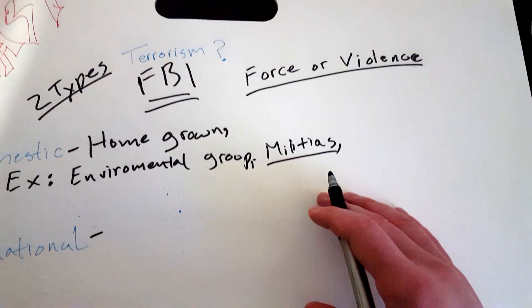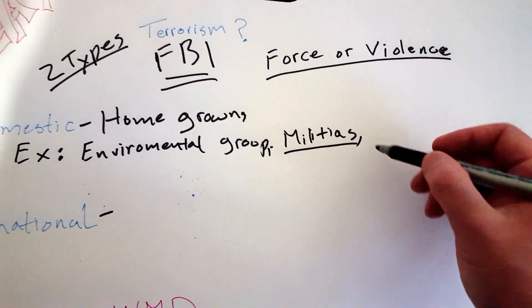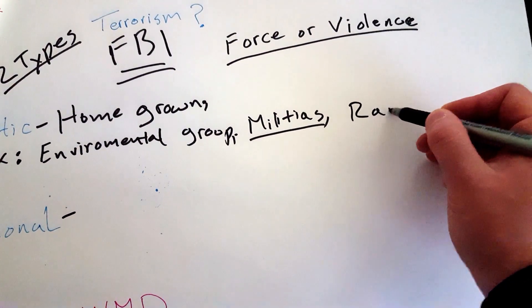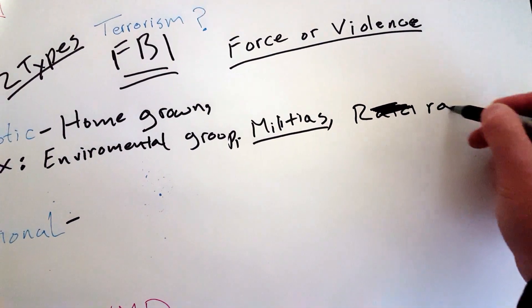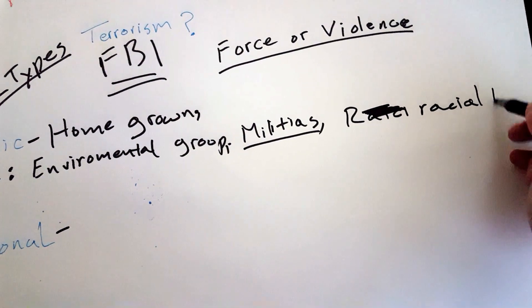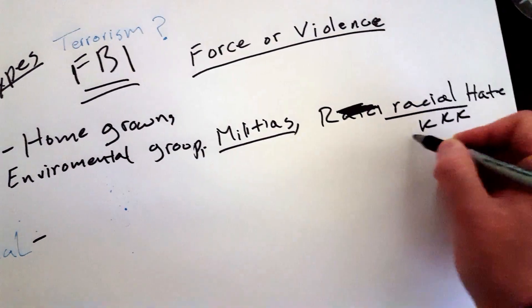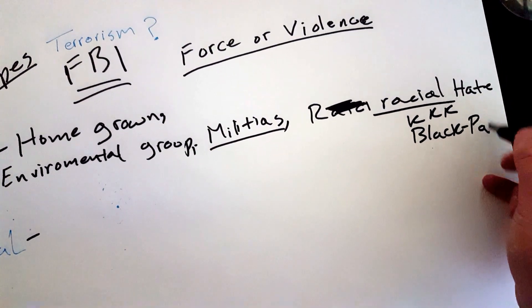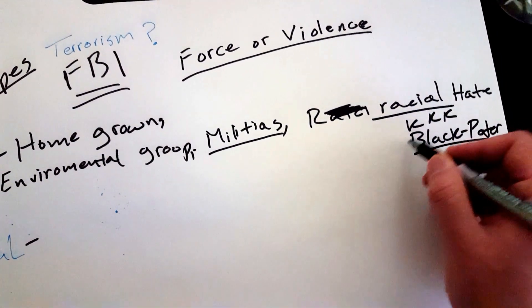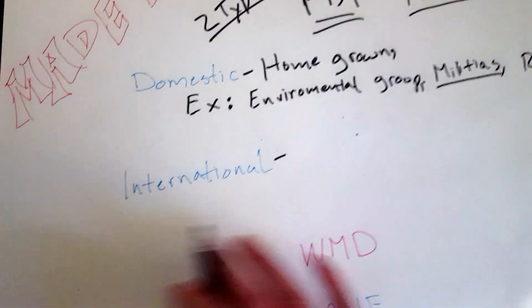And another one could be racial hate groups, like the KKK, Nazis, maybe the Black Panthers, but I doubt it. I'm not sure they were actually a hate group, but anyways, I guess depending on who you ask, these could also fall under domestic terrorists.